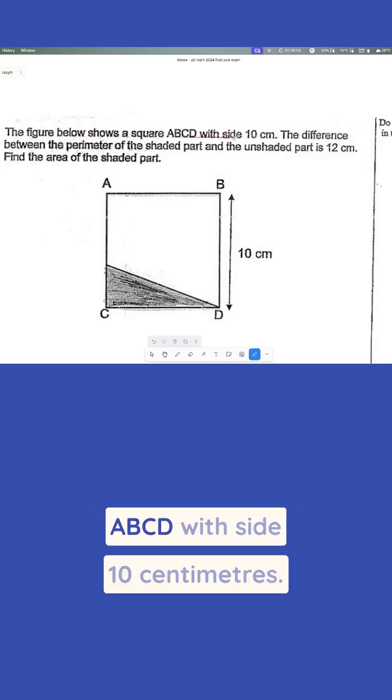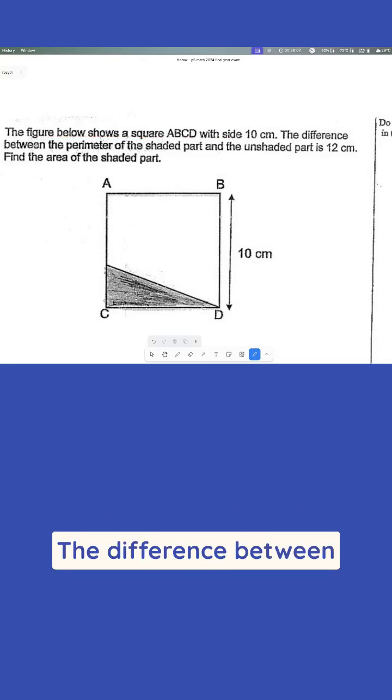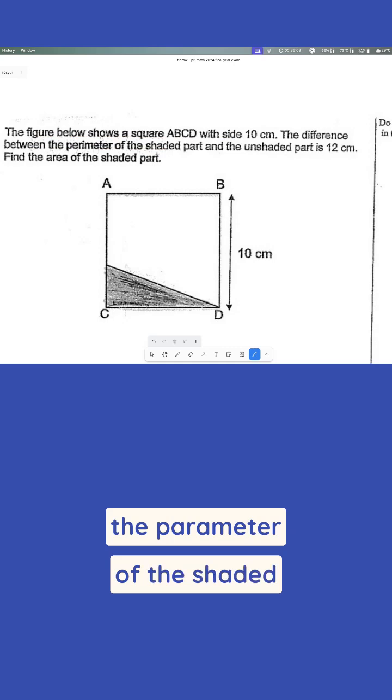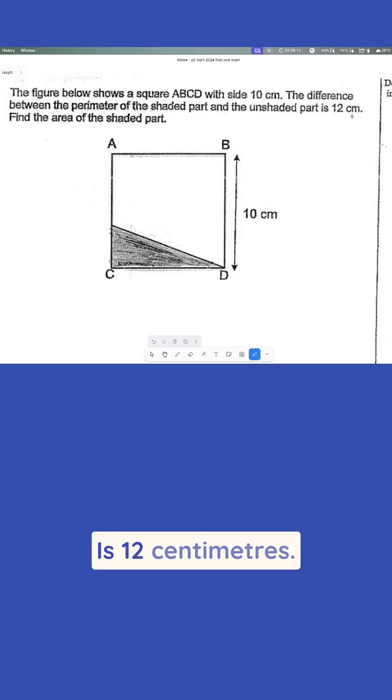So it says here, the figure below shows a square ABCD with side 10 centimeters. The difference between the perimeter of the shaded part and the unshaded part is 12 centimeters. Find the area of the shaded part.